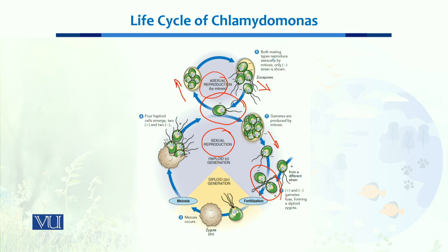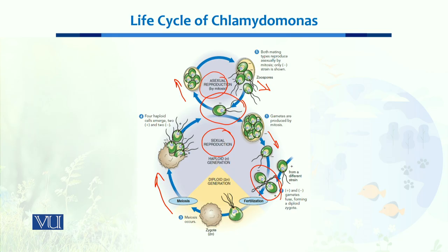This zygote then undergoes meiosis. After meiosis, four haploid gametes are produced. Half of these gametes are positive and half are negative. These gametes then mature to become complete Chlamydomonas organisms.